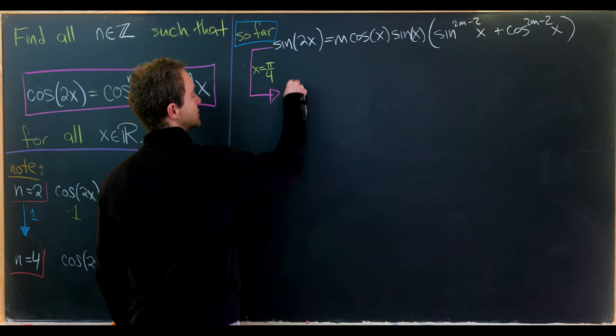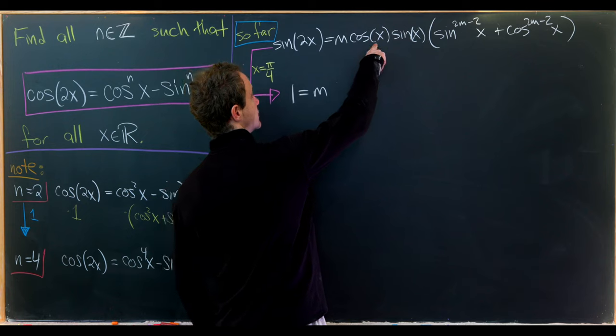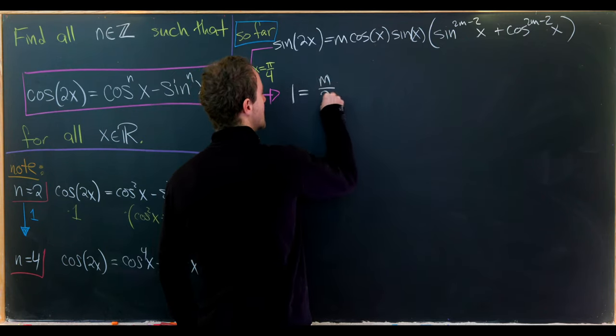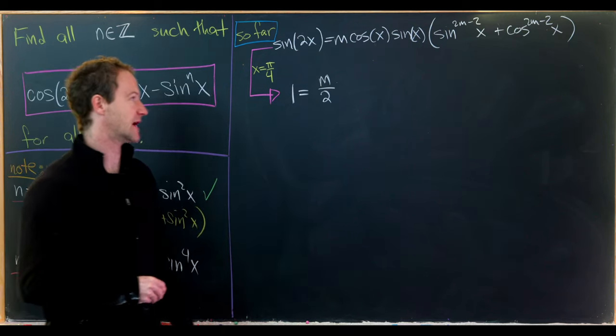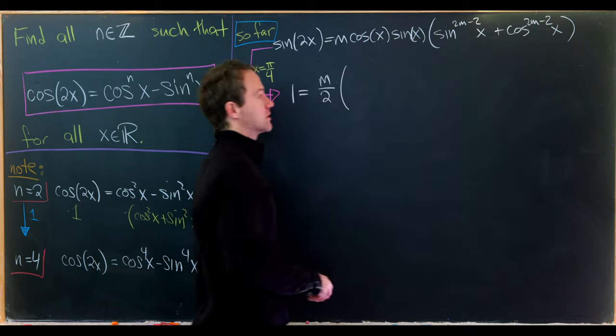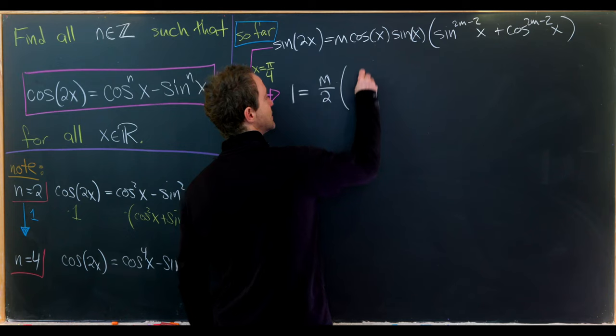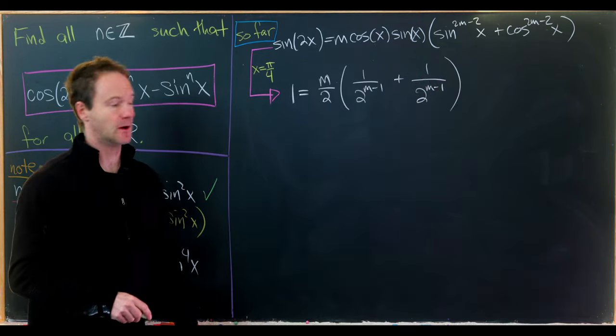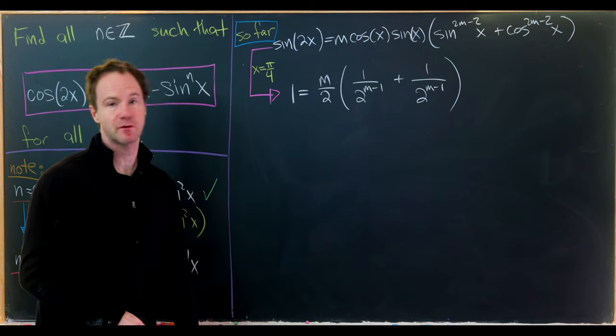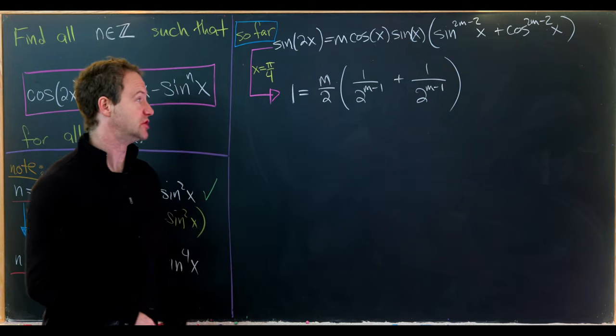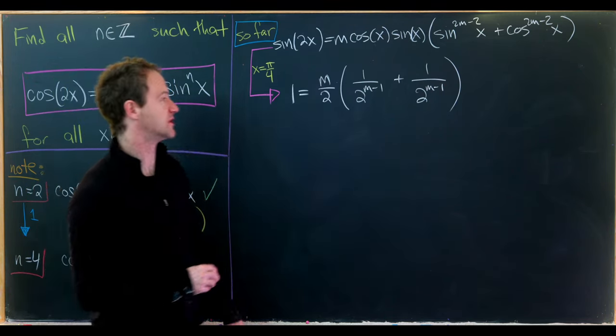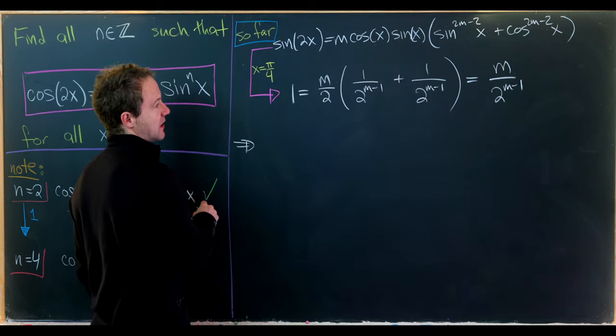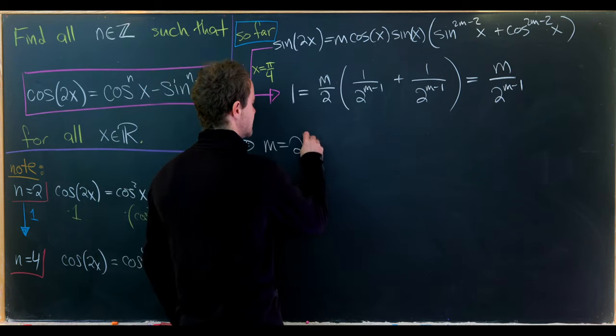Sine of π over 2 is 1. Then we'll have m times 1 over the square root of 2 times 1 over the square root of 2, which is 1 half. And here we have an even power, so this gives us 1 over 2 to the m minus 1 plus 1 over 2 to the m minus 1. We're taking half the sum of something with itself, so that just gives us 1 over 2 to the m minus 1 times m. This simplifies to m over 2 to the m minus 1, giving us the equation m equals 2 to the m minus 1.